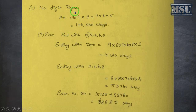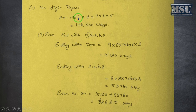No digit repeat means: first, 0 is not possible, so there are 9 digits allowed. For the second digit, the first digit can't occur here, so there are 9 possibilities. For the third digit, you can't have these 2 digits, so 8. Here, you can't have these 3 digits, so 7, then 6, then 5. So, this is how no digits are repeated.